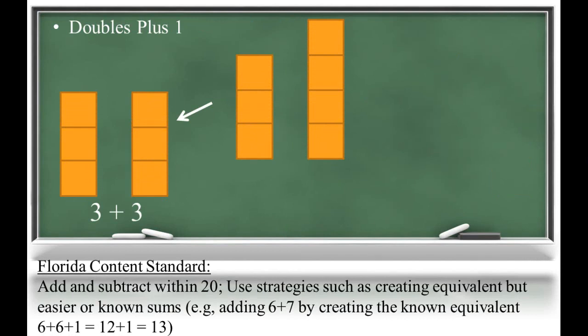If we use the doubles three plus three, we can then add one more. So three plus three plus one is the same as six plus one, which is seven.